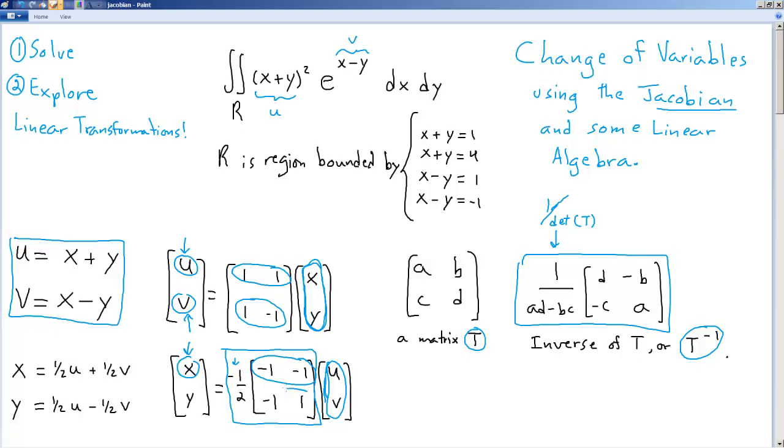And we do the same thing for the bottom row. Negative 1 u plus 1 v, all multiplied by negative 1 half, gives us the expression for y. So y equals 1 half u minus 1 half v.